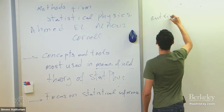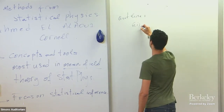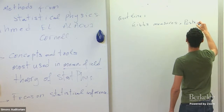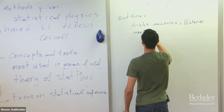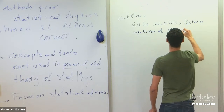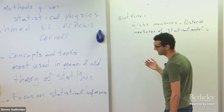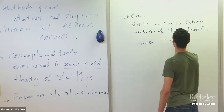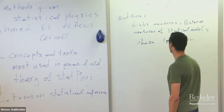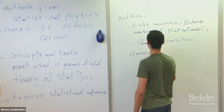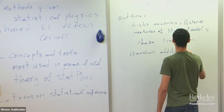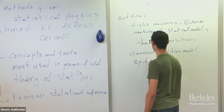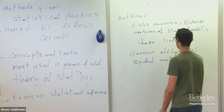For this first lecture, I'll be introducing Gibbs measures — these are posterior measures, since I'll only be looking at statistical inference. I'll introduce the free energy and partition function, look at their derivatives, and introduce a model where we can see a phase transition. I'll talk about the Gaussian additive model, and depending on time I'll also discuss the spiked matrix model, which is a special case of the Gaussian additive model.